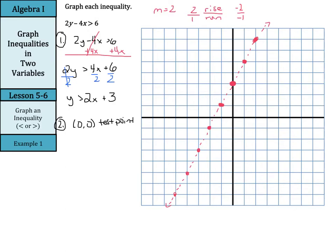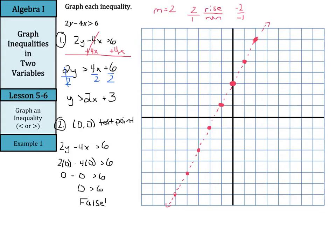I would encourage you to go back to the original inequality — 2y minus 4x is greater than 6 — to test, just in case you made a mistake somewhere in solving. We're going to stick in the 0s for x and y: 2 times 0 minus 4 times 0 needs to be greater than 6. We get 0 is greater than 6. Is that true? No, that is a false statement. So that means (0, 0) is not included in the solution, which means that entire half plane is the false half plane. Everything on the other side is the correct half plane.